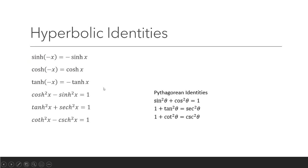We also have the hyperbolic identities. If the angle is negative for the hyperbolic sine, the hyperbolic sine will become negative. However, if the angle in the hyperbolic cosine is negative, it will not affect the sign — the hyperbolic cosine will still be positive. Here we have the Pythagorean identity of the hyperbolic trigonometric functions versus the Pythagorean identities of the normal trigonometric functions.